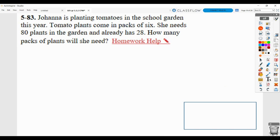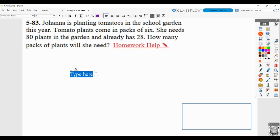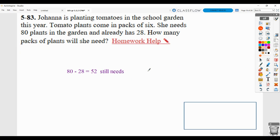Here, we know that she needs 80 plants. And she already has 28. We're going to subtract to see how many more she needs. So 80 minus 28 would be 52. So she has 52 plants that she still needs. They come in packs of 6. So we're going to take 52 and divide by 6.